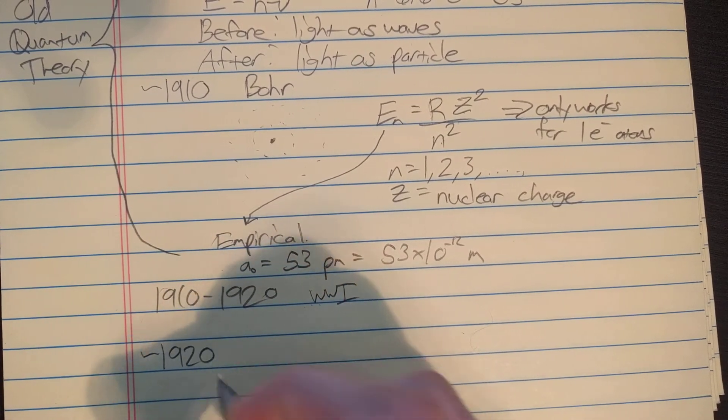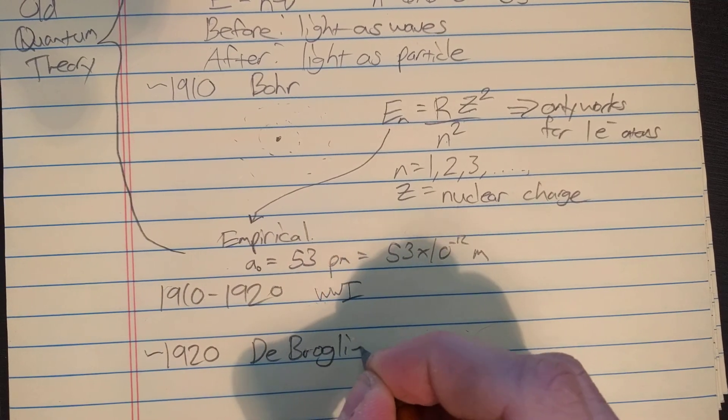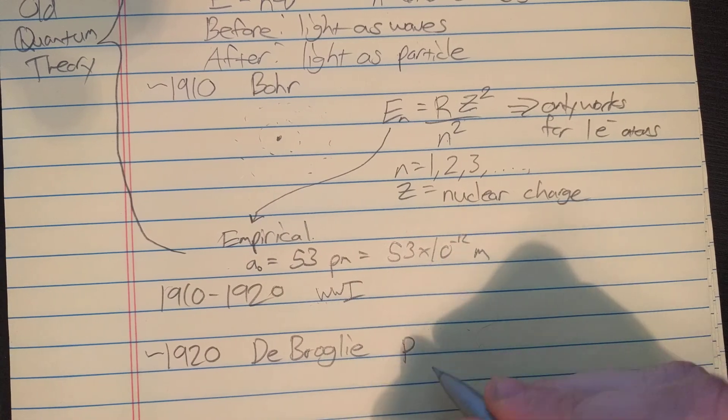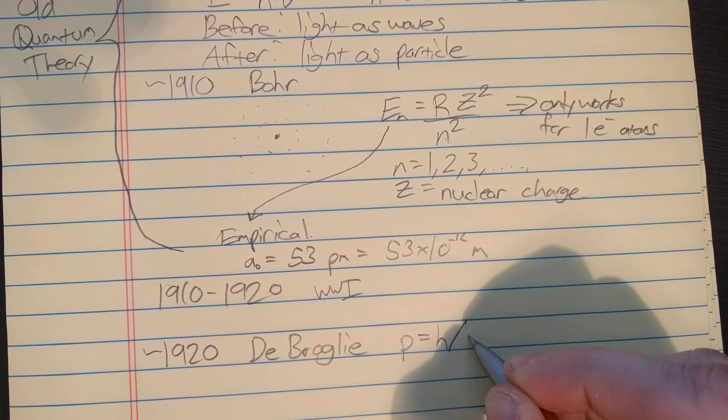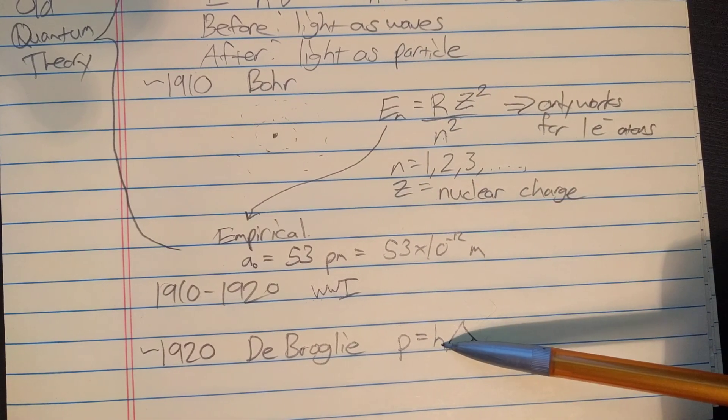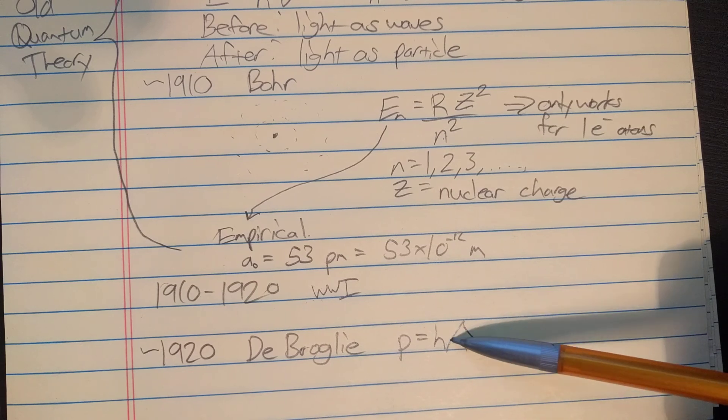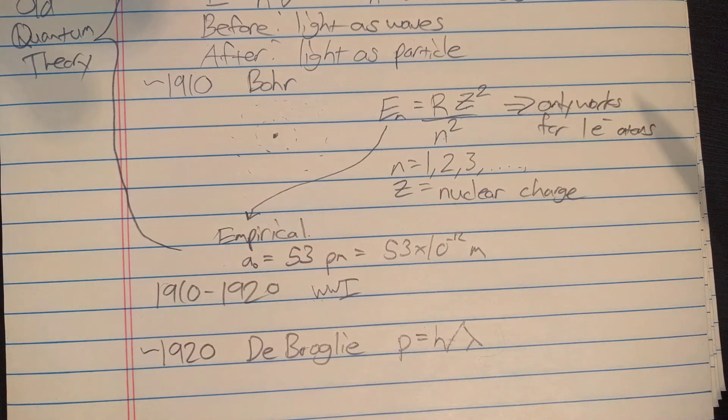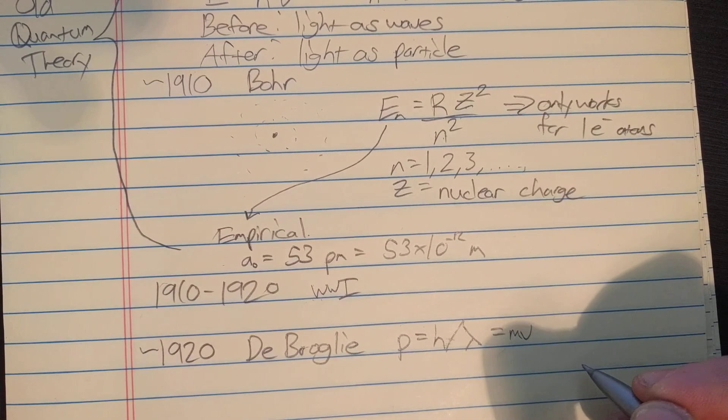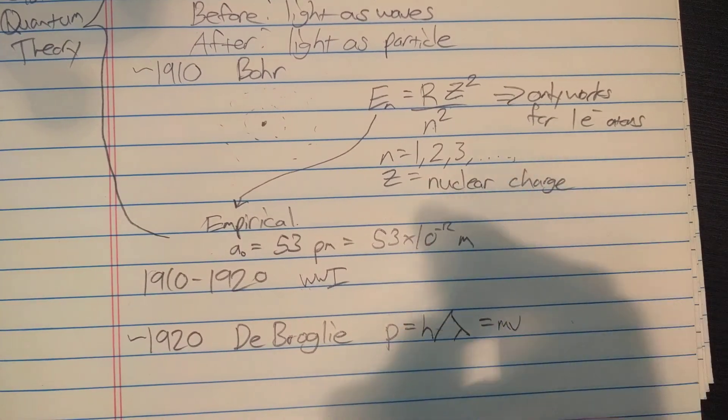But so around 1920 or so, Louis de Broglie gave us the formula that the momentum of something equals Planck's constant divided by lambda. We're starting to see more and more scientists use Planck's constant here and use the idea that things come in lumps. Since the momentum is equal to the mass times the velocity, you can calculate the wavelength of everyday objects, such as a baseball.